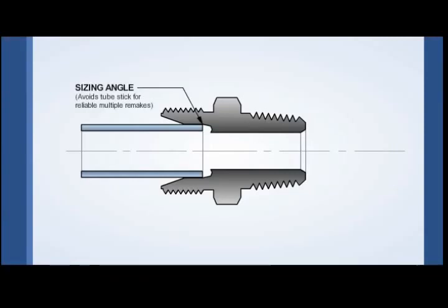During assembly, the sizing angle gently guides the tube slightly inwards, helping to prevent tube stick. Avoiding tube stick allows for multiple fitting remakes. In fact, if assembled and reassembled properly, GyroLock fittings can be remade more than 100 times and still be demonstrated to be leak-tight.